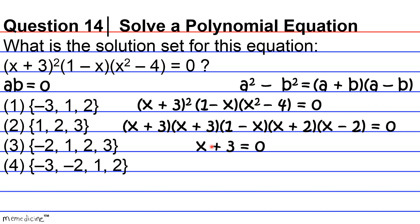So x plus three is equivalent to zero, and we're using the zero product property specifically here, we're setting all our factors to zero. We're going to assume that all the factors are equivalent to zero.